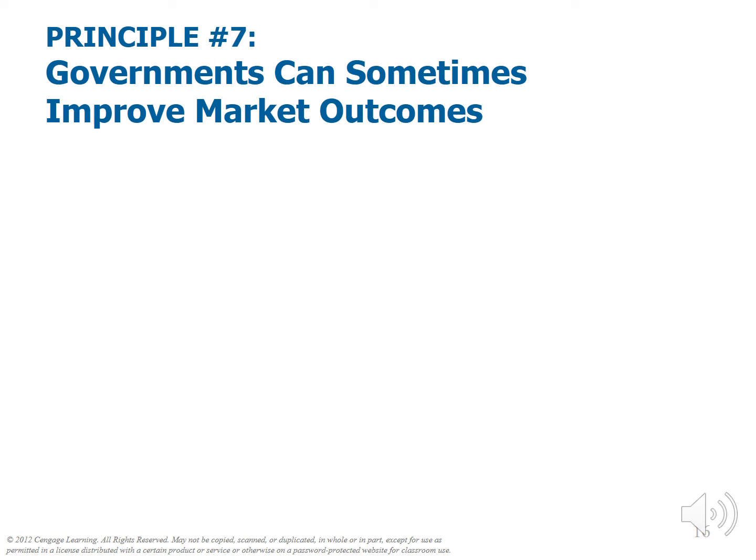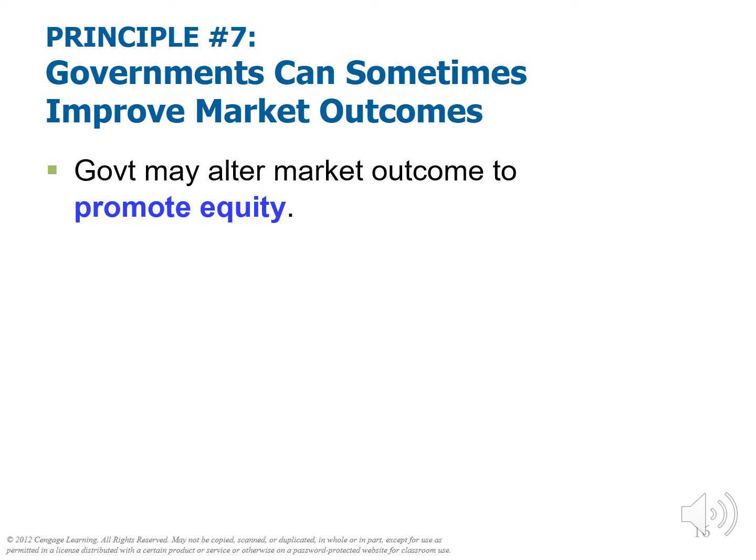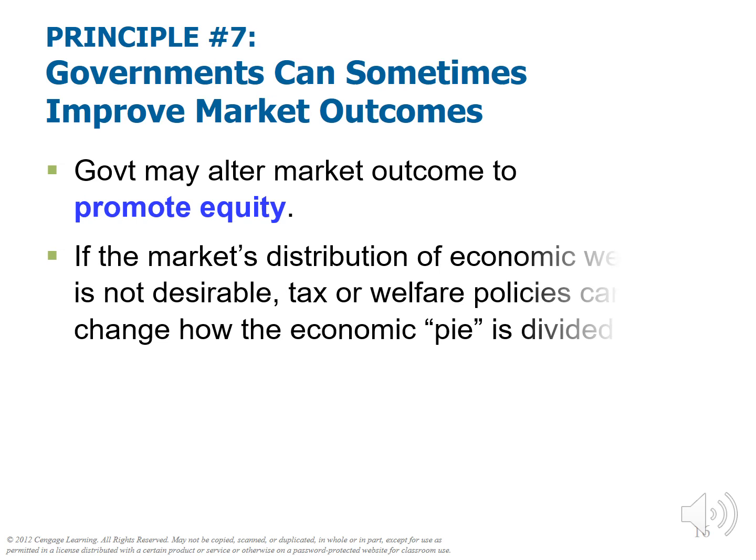Public policy can be used to help in cases of externalities and market power. Aside from using government to improve where markets fail, there might be cases where governments want to achieve goals society views as more valuable than efficiency. For instance, governments may alter market outcomes to promote equity. If the market's distribution of economic well-being is not desirable, tax and welfare policies can change how the economic pie is divided. We saw earlier that this can come at the expense of efficiency. If the government promotes equity, it's because society has decided that the gains from equity are worth more than the losses to efficiency — a value trade-off each society must make.